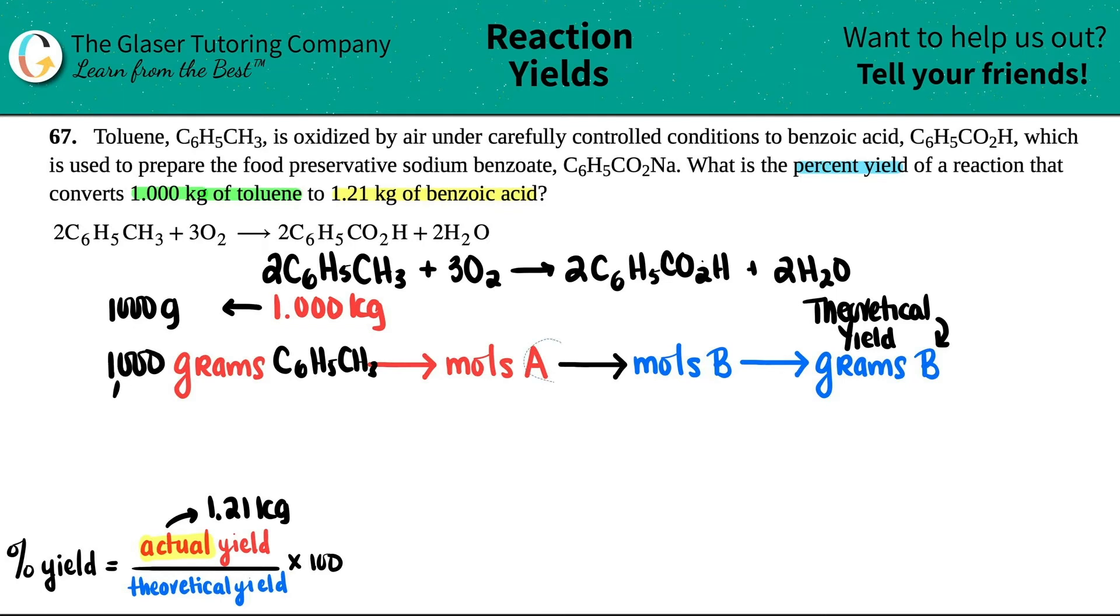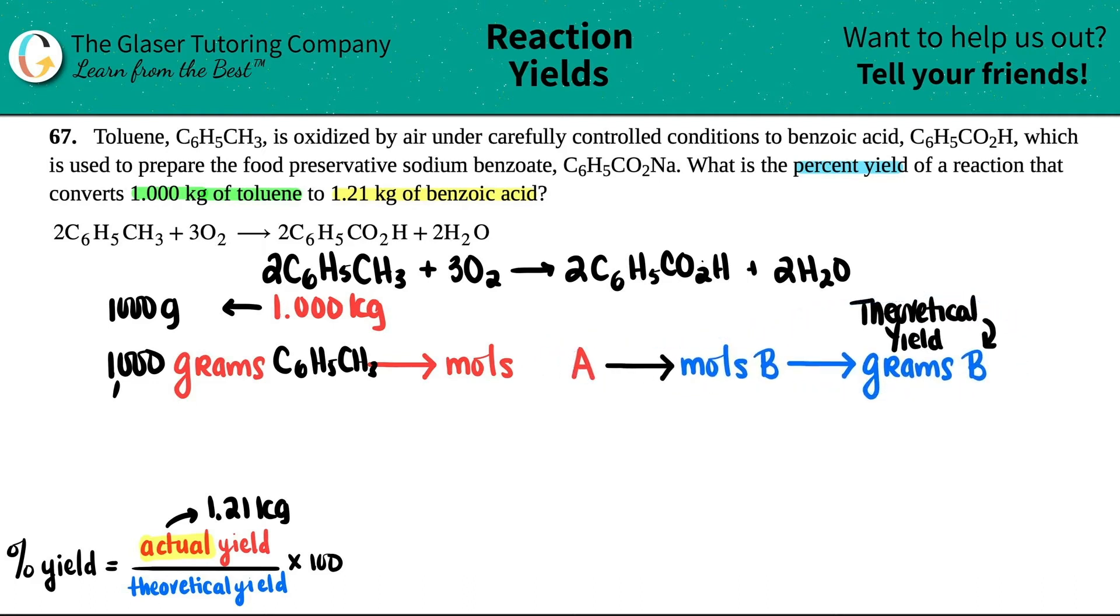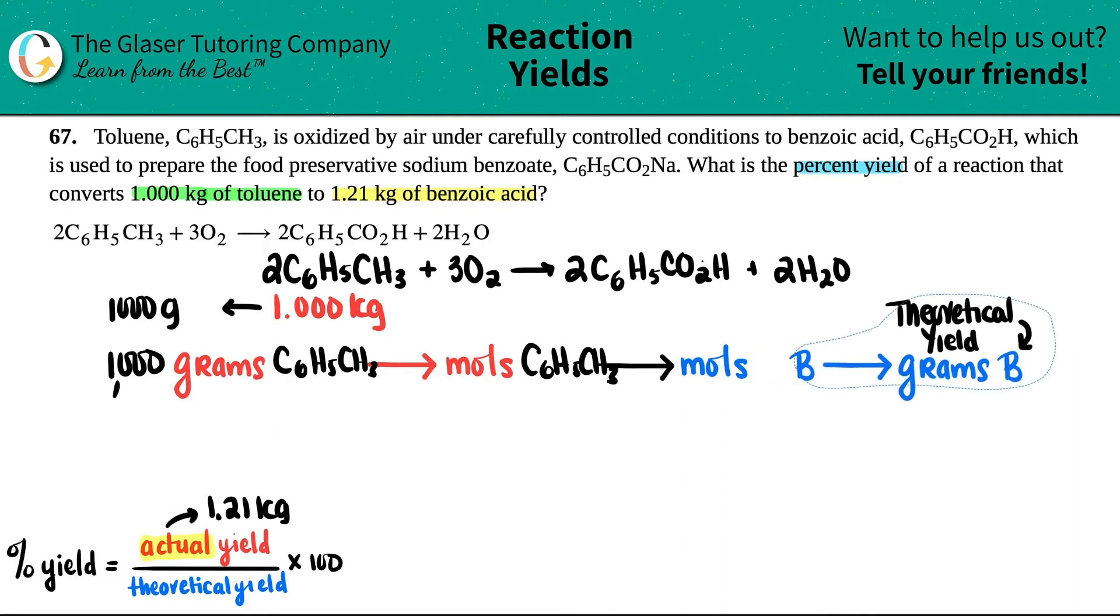So let's write this out. I'm going to start with what I'm given, the one kilogram. Now, technically this says grams. So first let's just convert the kilograms to grams. From kilograms to grams, all we have to do is times by a thousand. So this would technically be a thousand grams. That's what I'm starting with here.